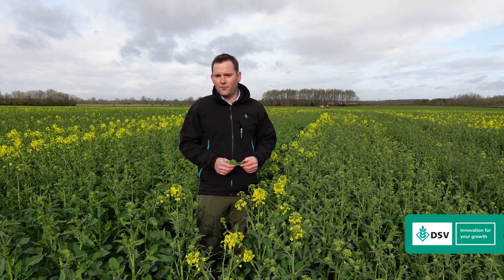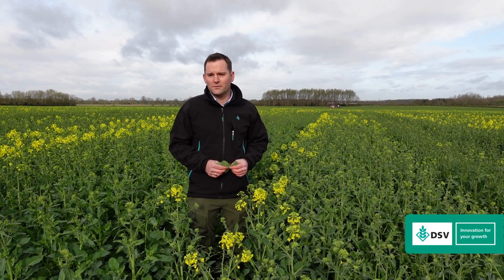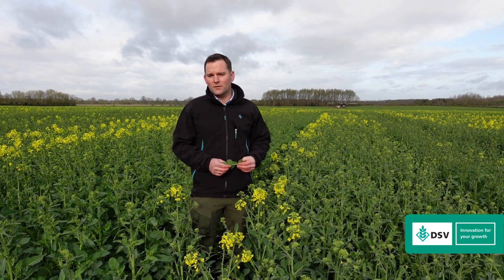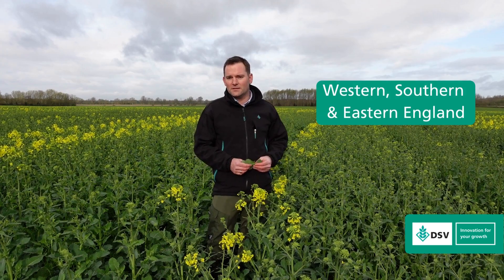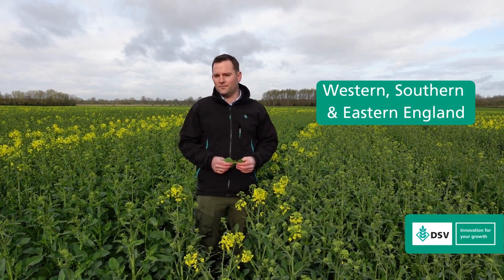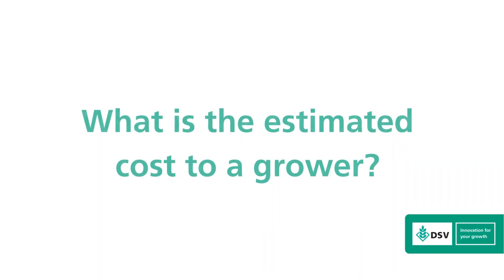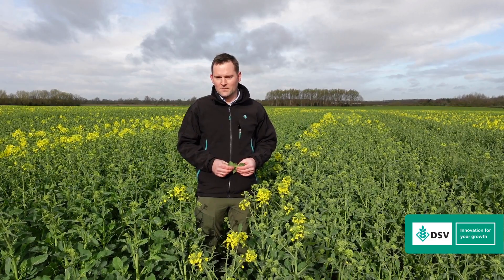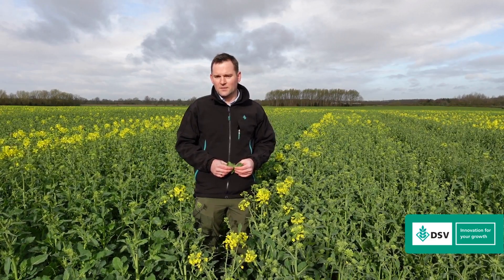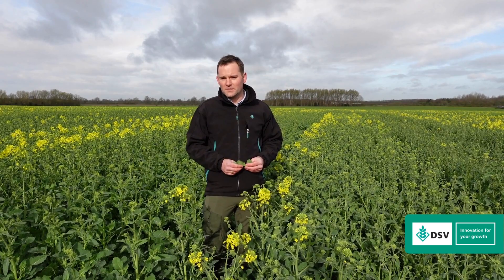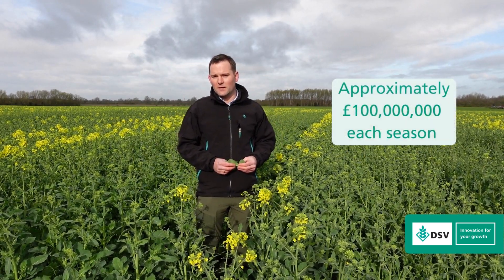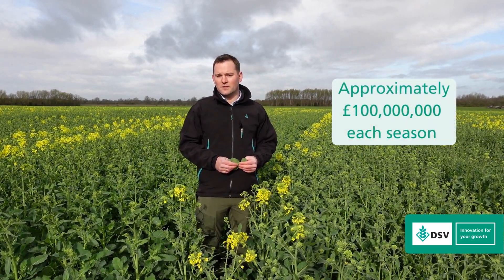FOMA stem canker is one of the most severe diseases in oilseed rape in Europe, but especially in the UK, mainly in the western, southern and eastern parts of this country. The estimated cost in terms of yield losses from this disease is around 100 million pounds a year.